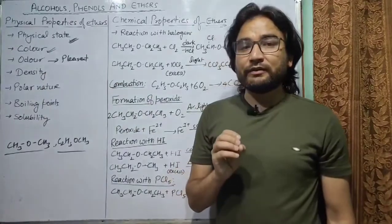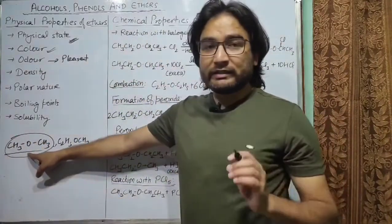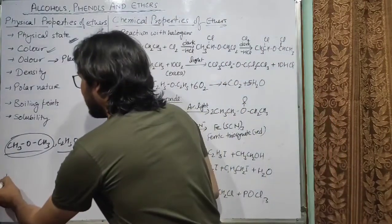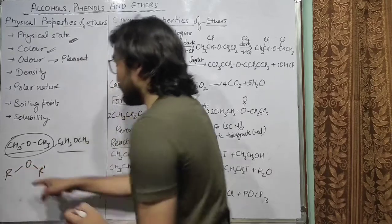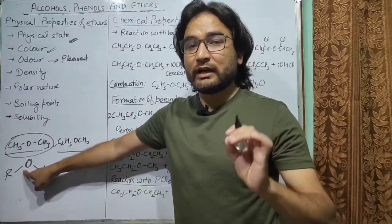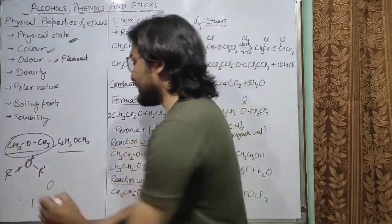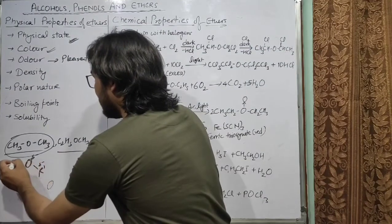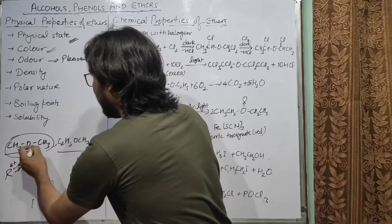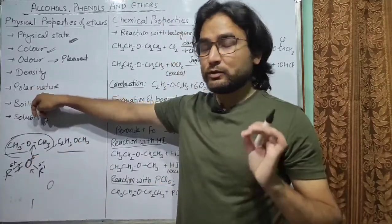The next is density of ethers. The density of ethers increases with increase in molecular mass. The next is polar nature. Ethers are generally polar in nature. The structure of ethers is R-O-R'. Because a highly electronegative oxygen atom is attached to the carbon atom, the oxygen atom will acquire a partially negative charge and the carbon atoms of the R groups will have a partially positive charge. So the net direction of the dipole moment will be towards the oxygen atom, and because of this net dipole moment, ethers are polar in nature.